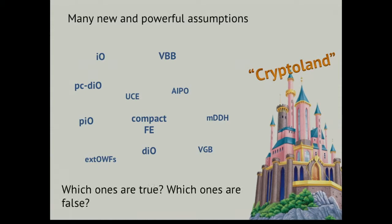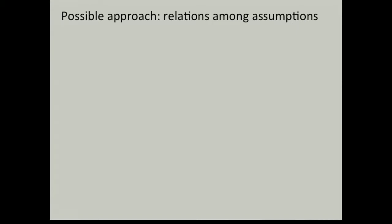One of the things about all of these notions and assumptions that we've been studying is that they are very powerful. But something we are all asking ourselves is how many of these assumptions or notions are really true, which ones really exist, and which ones are too good to be true. In a quest to find a good map of Cryptoland, we are trying to find relations among different notions and find out what implies what, and what implies that something else doesn't exist.